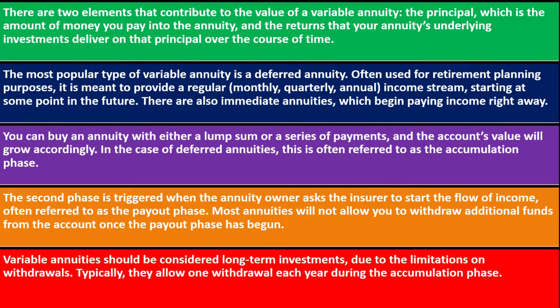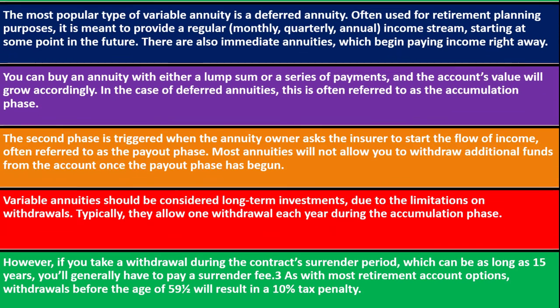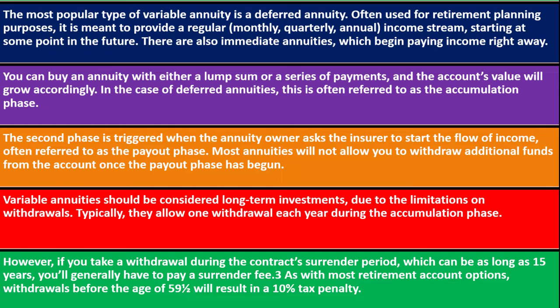Variable annuities should be considered long-term investments due to the limitations on withdrawal. In an emergency, you can't easily say 'give me my money back' as you could with money held directly in the stock market. Typically they allow a withdrawal each year during the accumulation phase; however, if you take a withdrawal during the contract's surrender period — which can be as long as 15 years — you'll generally have to pay a surrender fee.